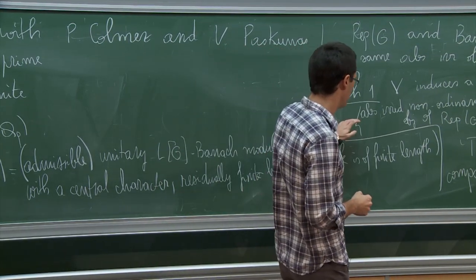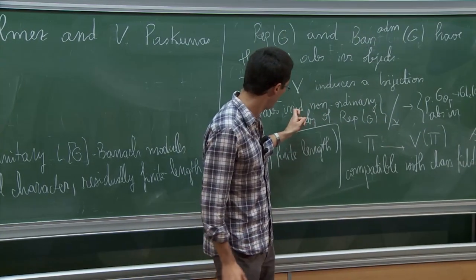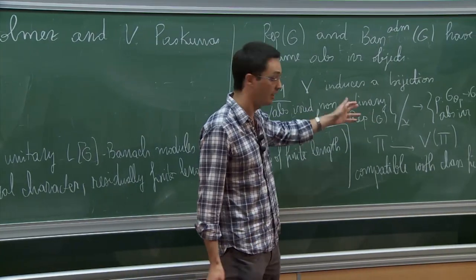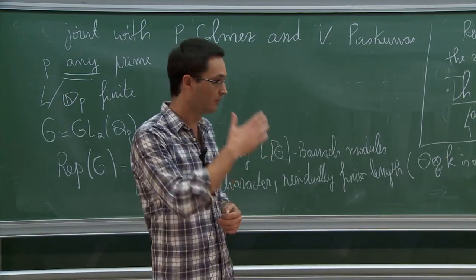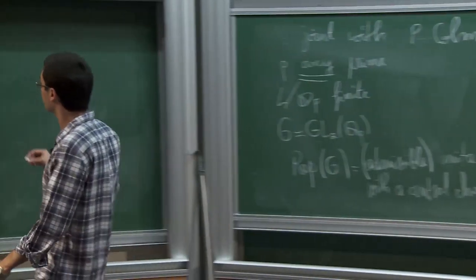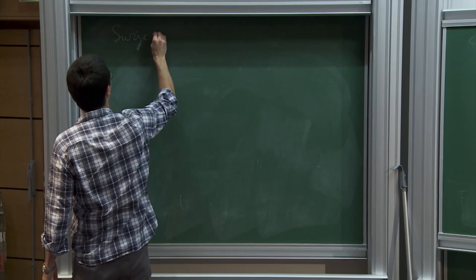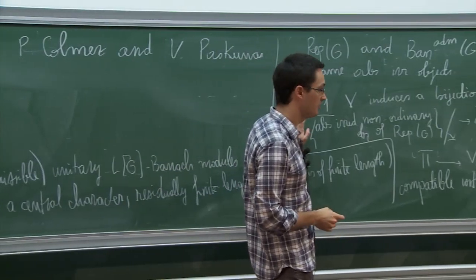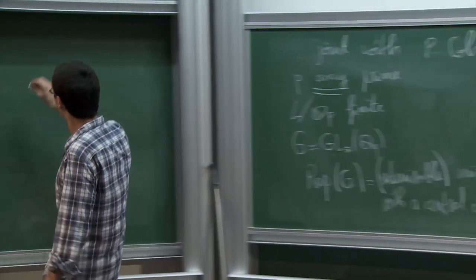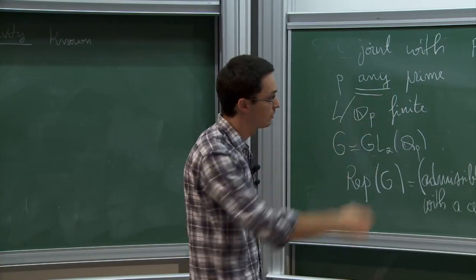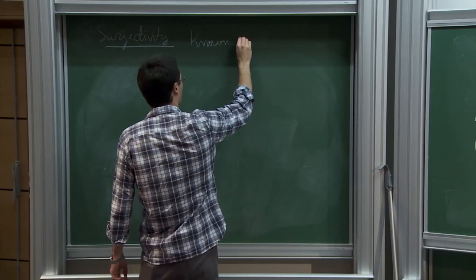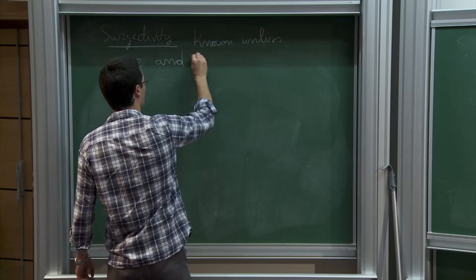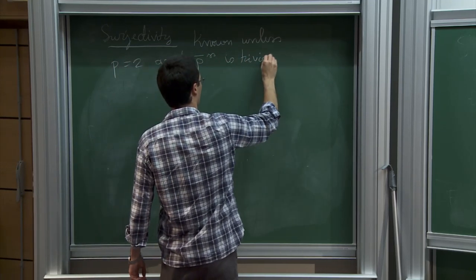Let's see what has already been proved about Theorem 1. Essentially what we proved so far is that this map is well-defined: the image of any absolutely irreducible non-ordinary object is two-dimensional and absolutely irreducible. What we need now is injectivity and surjectivity. Surjectivity is essentially known in all cases but one: when p is 2. The theorem itself was known by work of Paskunas when p is at least 5. The remaining unknown case is when p equals 2 and the mod-p Galois representation ρ̄ is trivial up to a twist.